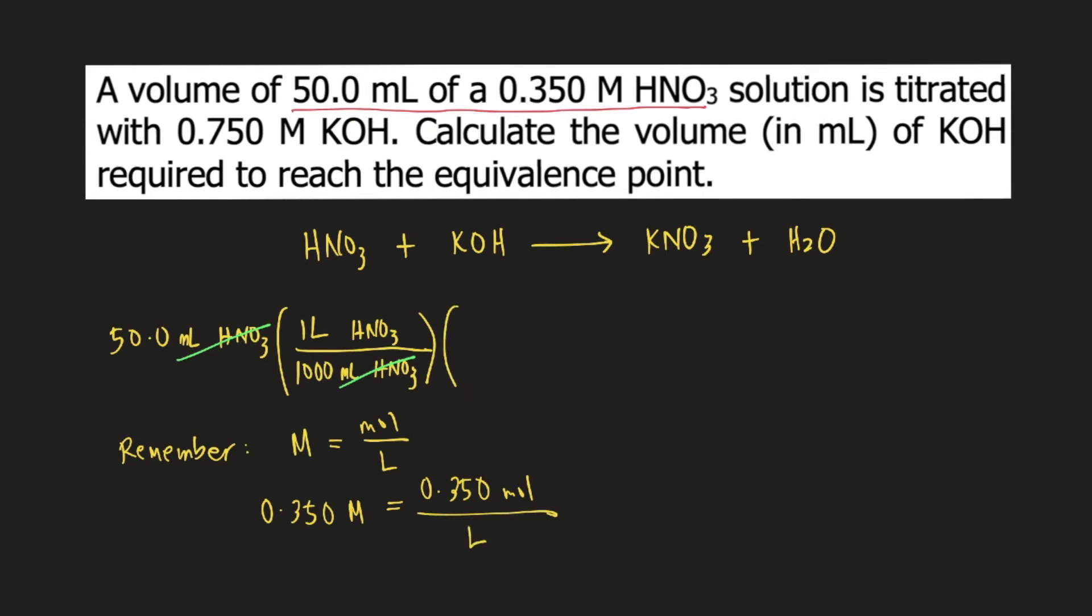we can convert liters into moles. So 1 liter of HNO3 contains 0.350 moles of HNO3. Liters would cancel, and we now have moles of HNO3.